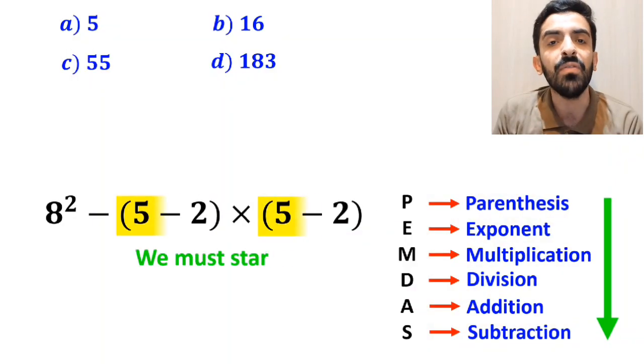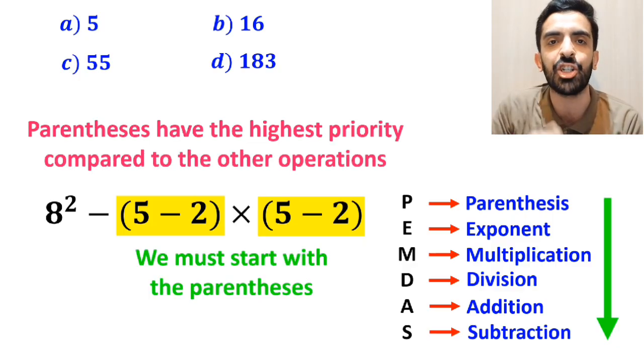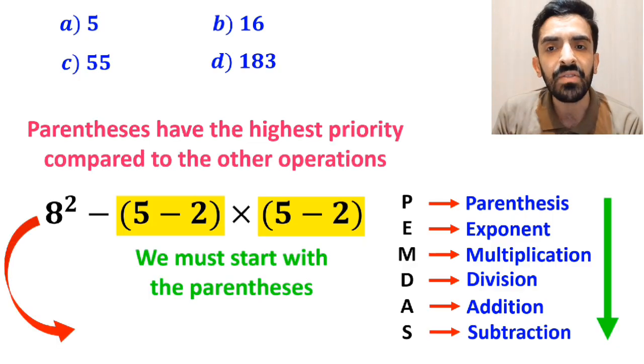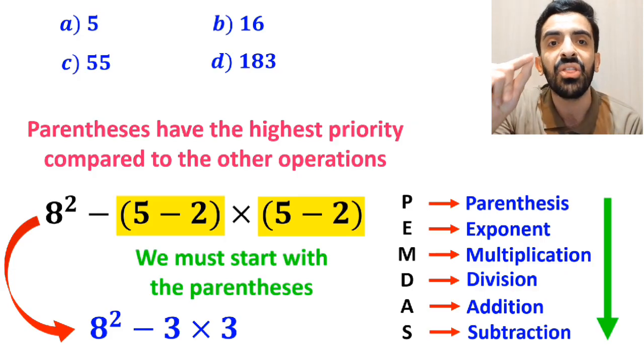So, we must start with the parenthesis first, because according to the PEMDAS rule, parenthesis have the highest priority compared to the other operations. Okay, instead of this expression, we can write 8 squared minus 3 then times 3.